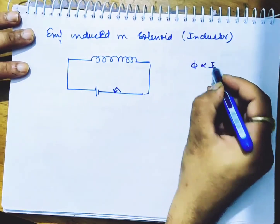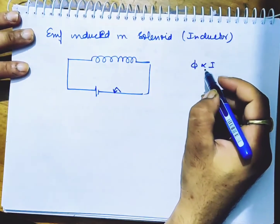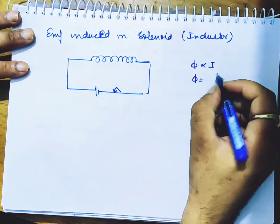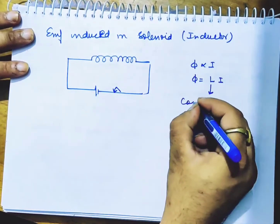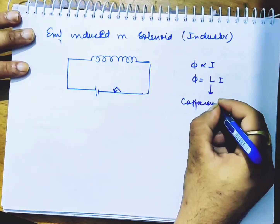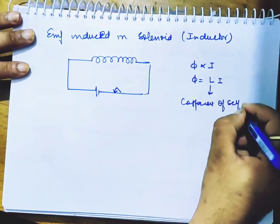The flux totally depends on - the flux is equal to Li, and this L is known as coefficient of self-inductance.